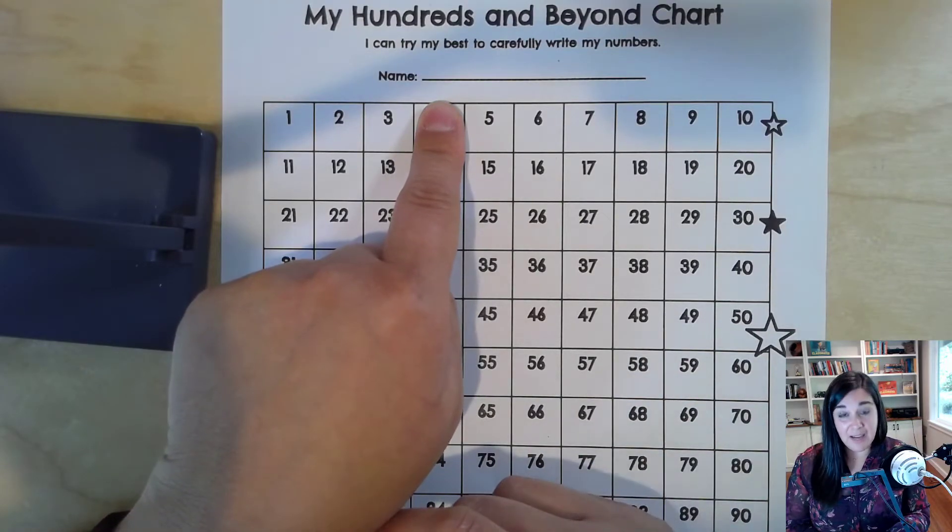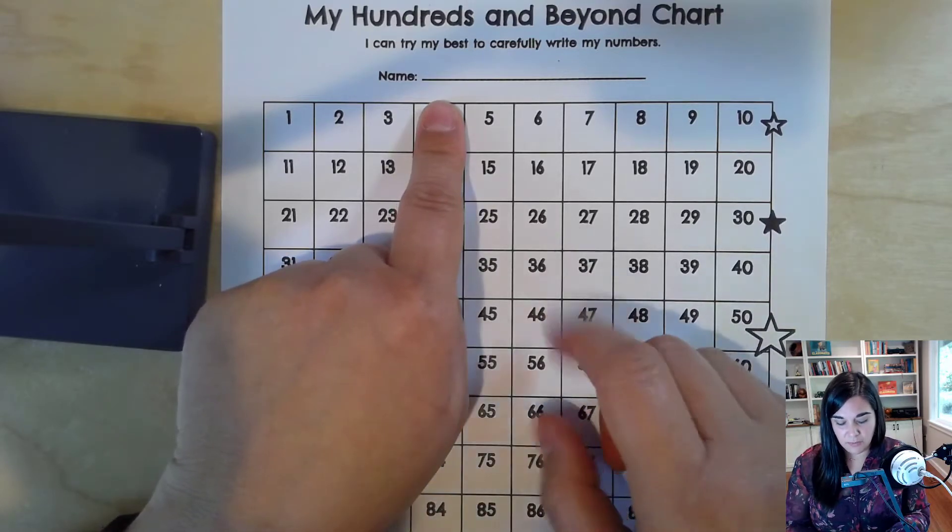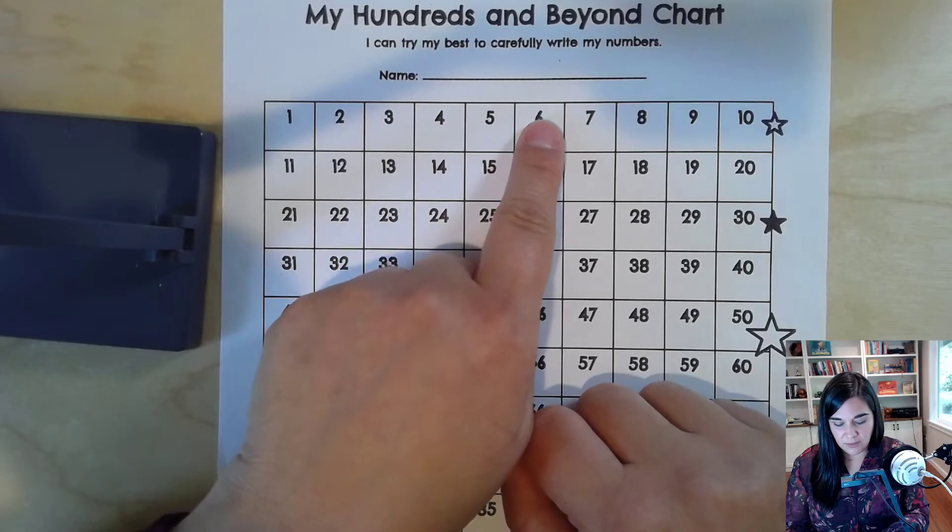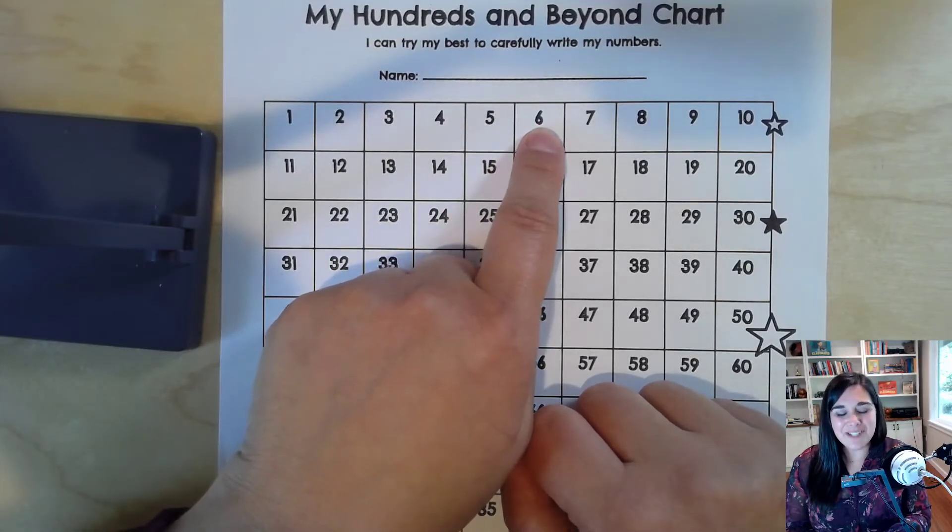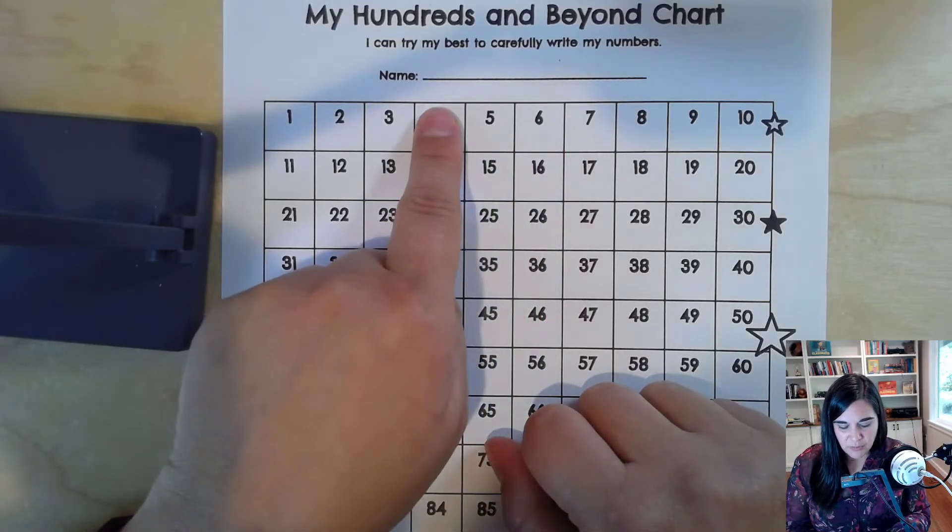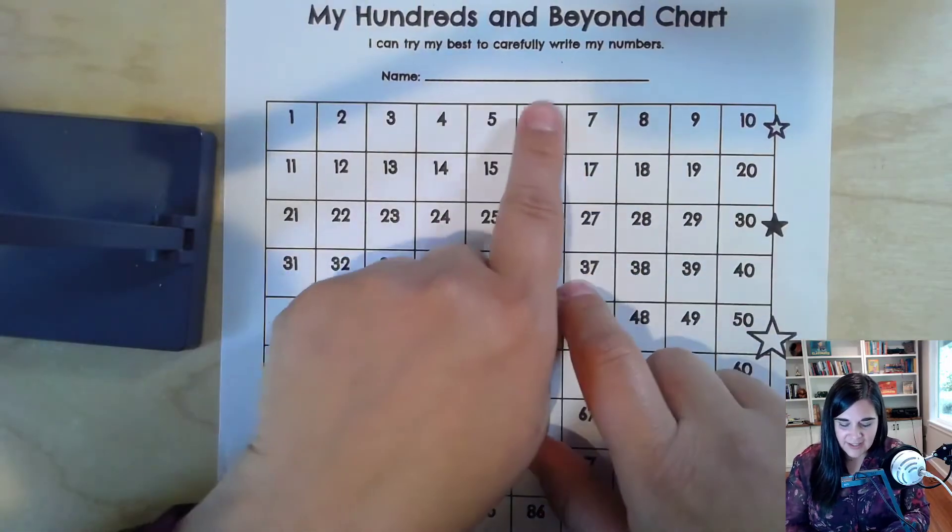Oh dear. I might need to move my finger. 4, then 2 more. 1, 2. That's the number 6. So 2 more than 4 is 6.